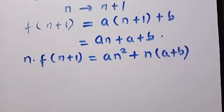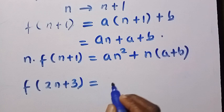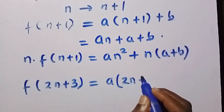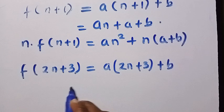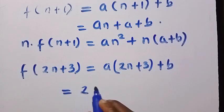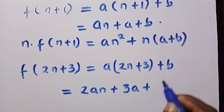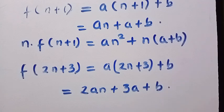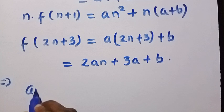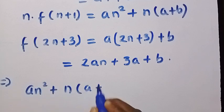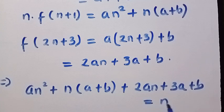We also need f of 2n plus 3. Applying the same substitution, f of 2n plus 3 equals a times bracket 2n plus 3, plus b, which expands to 2an plus 3a plus b. Adding the two expressions together, we get an squared plus n times bracket a plus b, plus 2an plus 3a plus b, and everything equals n squared.